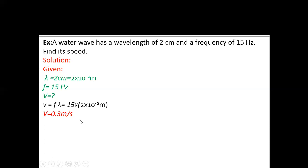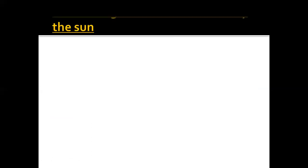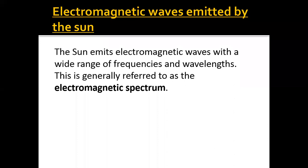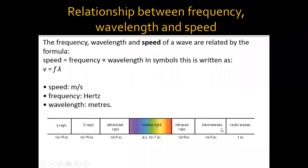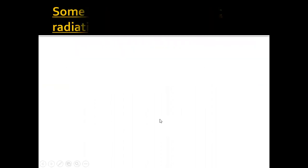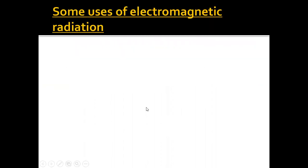As you know, electromagnetic waves are emitted by the sun — meaning the sun gives out electromagnetic waves across a wide range of frequencies and wavelengths. This is generally referred to as the electromagnetic spectrum. The rays coming from the sun are all part of the electromagnetic spectrum.